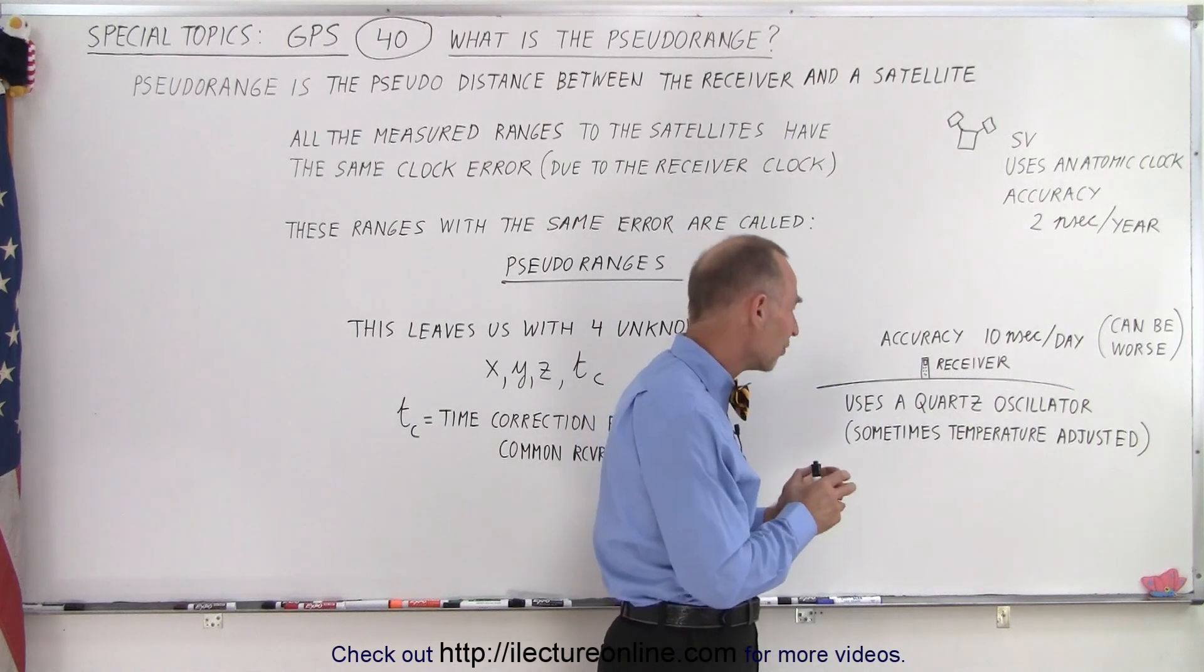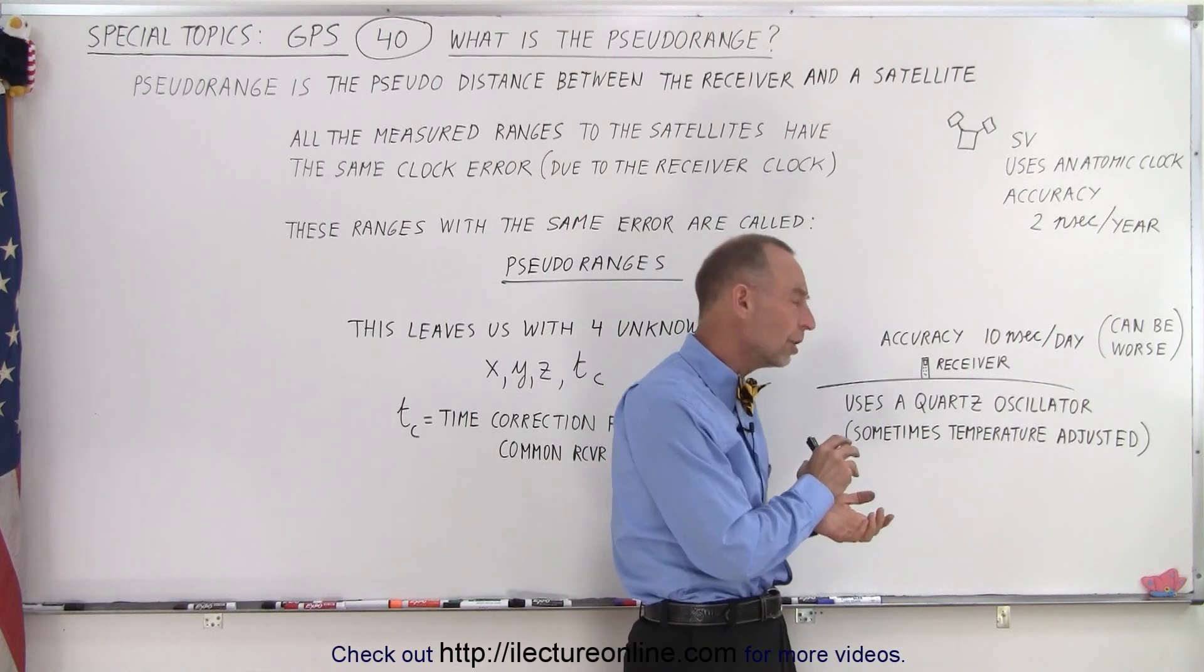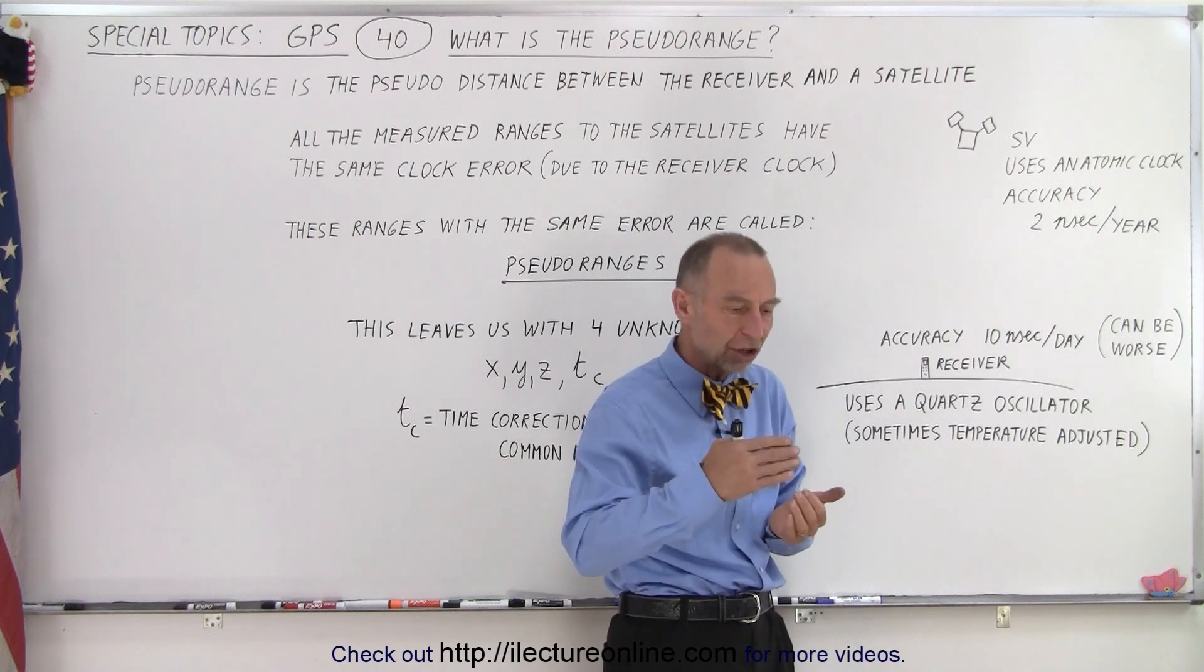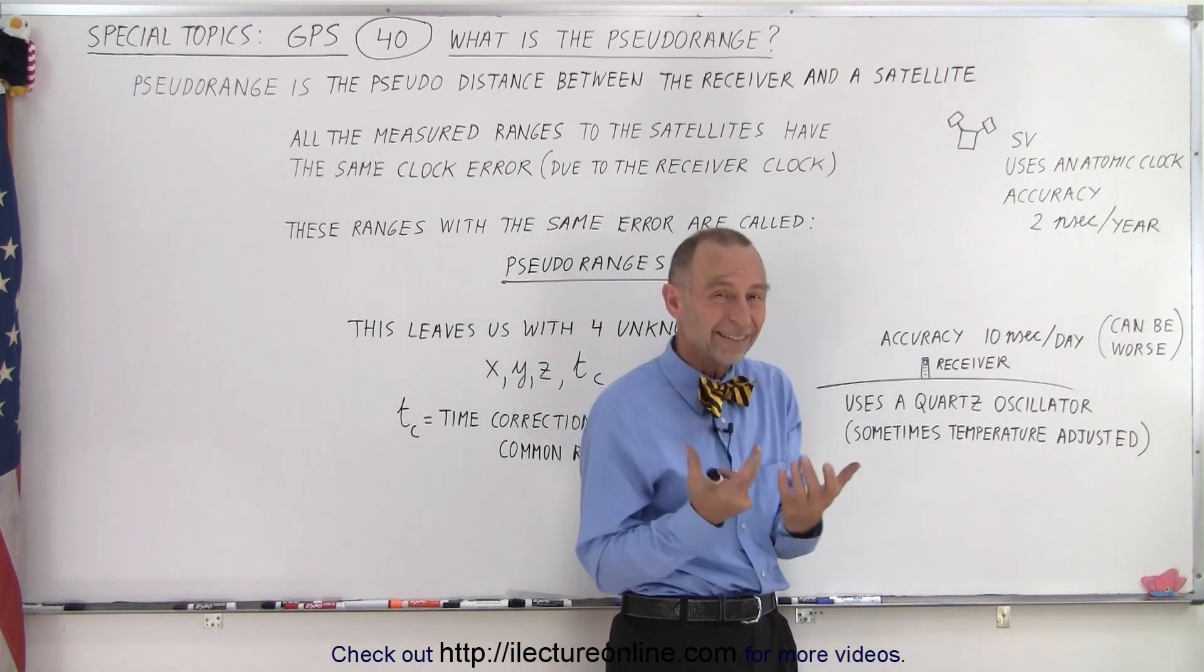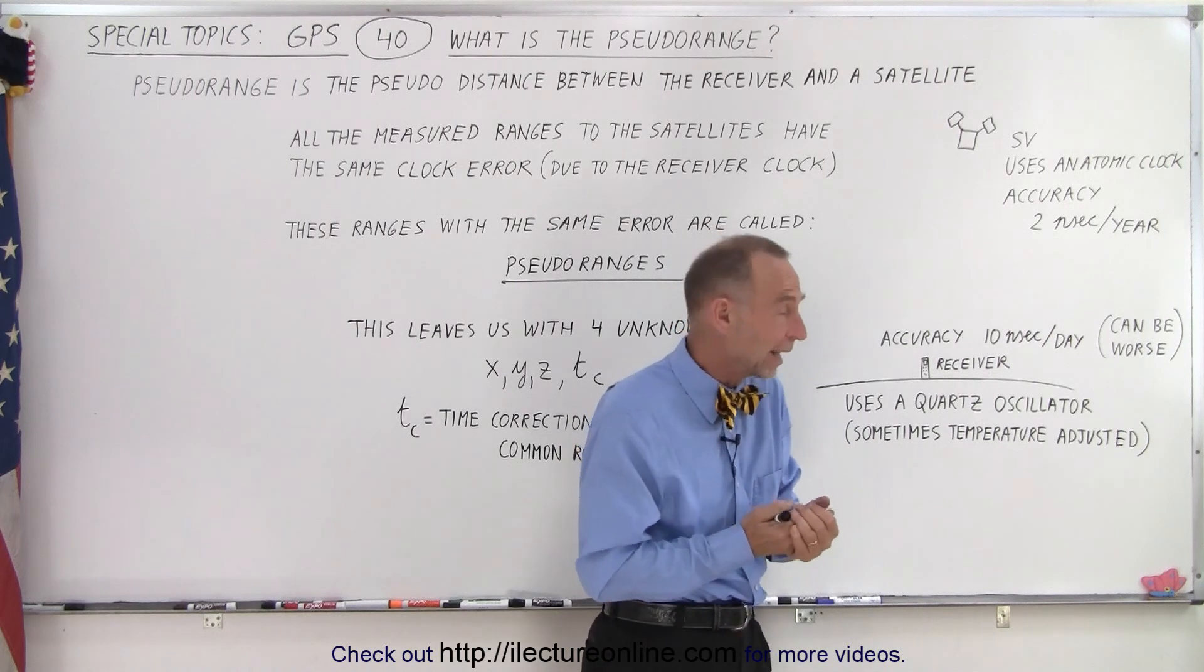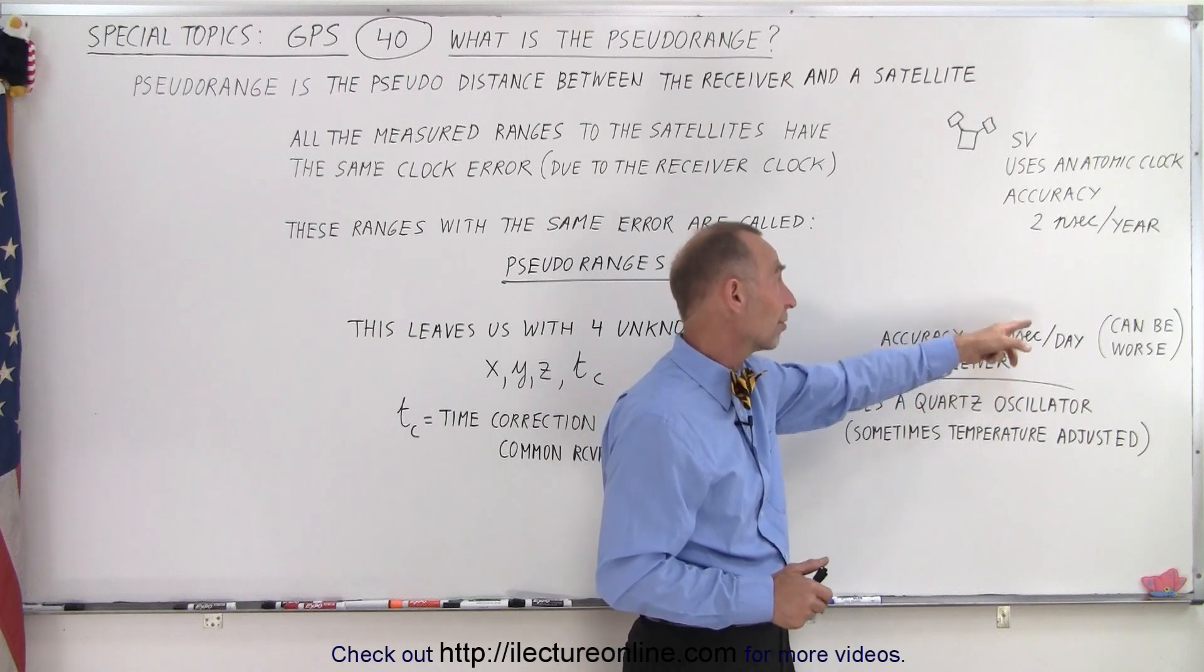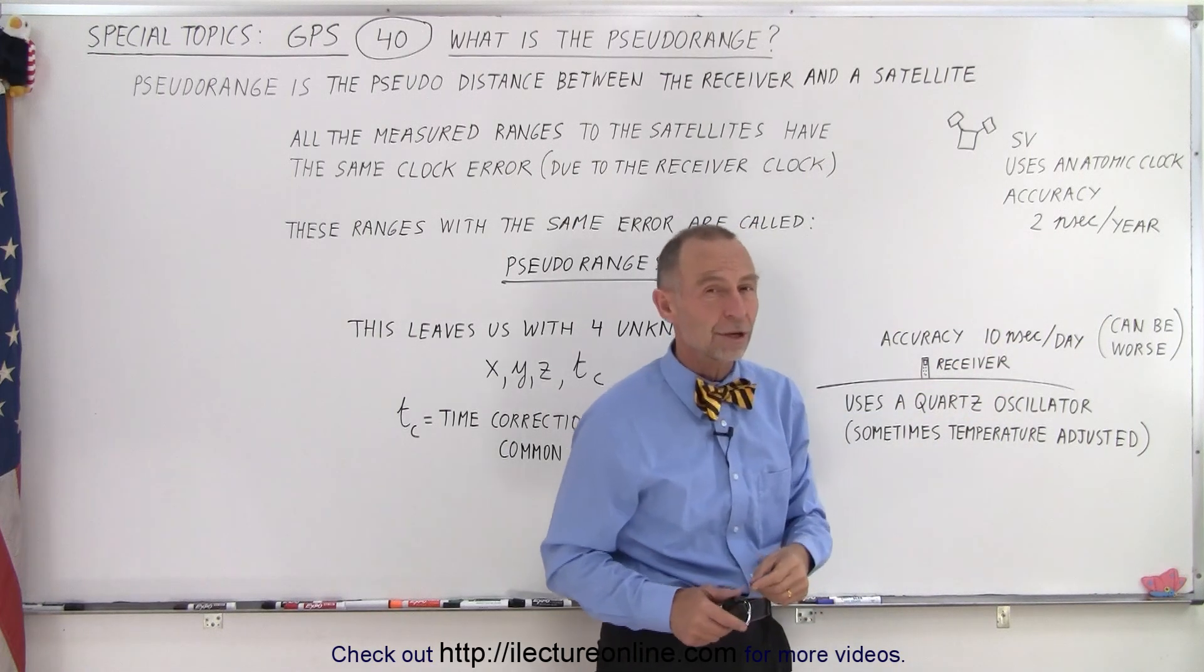For good receivers we use temperature-adjusted oscillators. In other words, the oscillation changes by temperature, and so when we sense the temperature we make an adjustment for that in order to have a smaller error. But nevertheless, 10 nanoseconds per day is a lot worse than 2 nanoseconds per year.